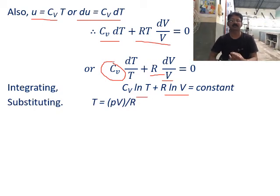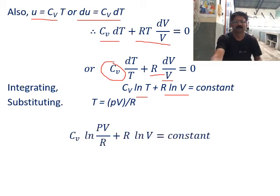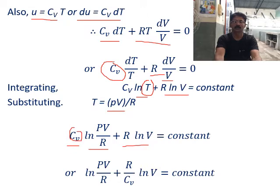Now substituting T equals PV by R from the ideal gas equation PV equals RT, we get CV times ln(PV by R) plus R ln V equals constant. Dividing both terms by CV: ln(PV by R) plus R by CV times ln V equals constant. Since R by CV equals gamma minus one, we replace R by CV with gamma minus one.